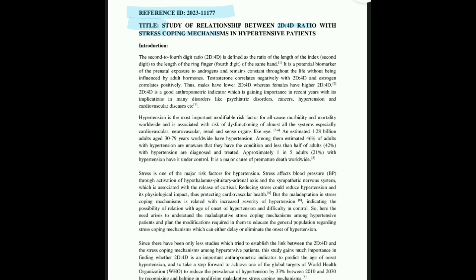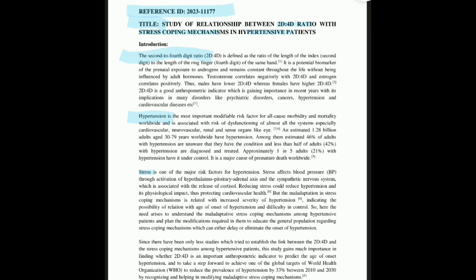The title is 'Study of Relationship Between 2D:4D Ratio with Stress Coping Mechanism in Hypertensive Patients.' So there are three things here: the 2D:4D ratio, the stress coping mechanism, and hypertension. There are three paragraphs — one explaining about 2D:4D ratio, another about hypertension, and the last one about stress. You have to make the introduction in a way that explains your title, explains your study, and what the existing literature says about it.